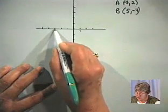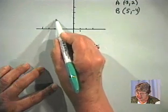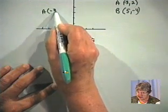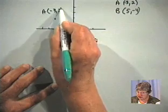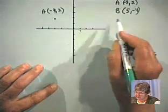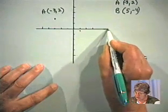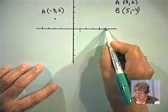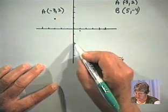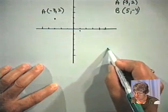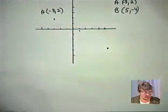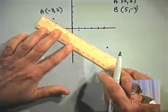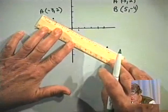On the coordinate axis, point A would be 3 units to the left and 2 units up, so approximately here — A with coordinates negative 3, 2. Point B has coordinates 5, negative 4, so about 5 units to the right and 4 units down, approximately here. What I'm interested in is finding the length of the line that joins these two points.